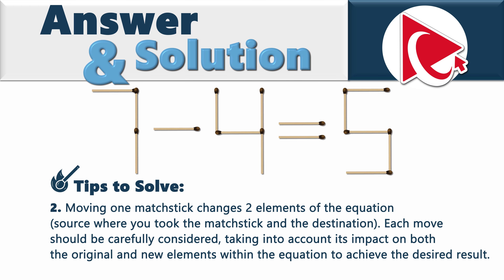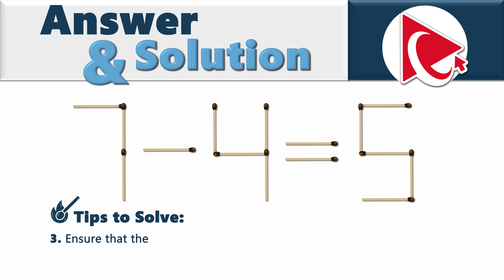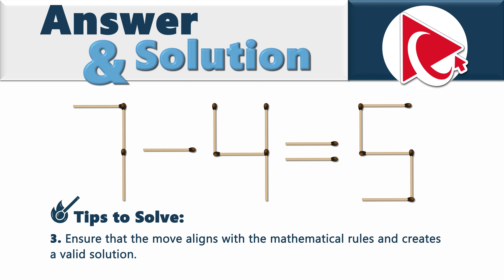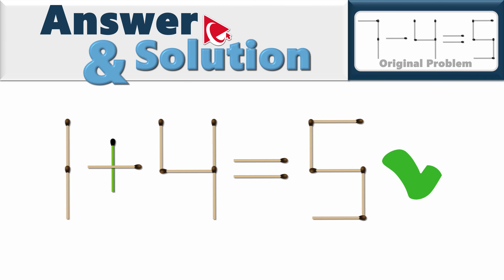Once you follow these simple tips, you need to ensure that the move aligns with the mathematical rules and creates a valid solution. The solution is rather simple: you need to take one matchstick from the first digit and move it to the mathematical sign. The correct equation is 1 plus 4 equals 5.